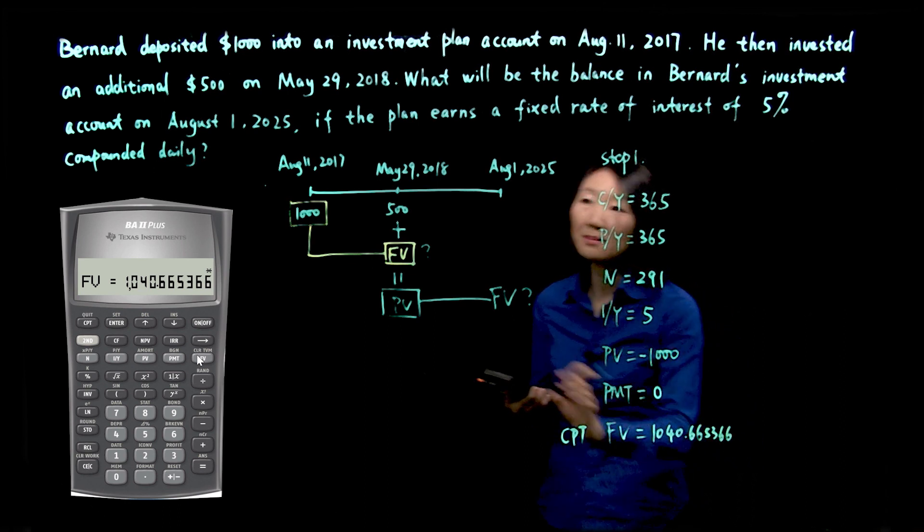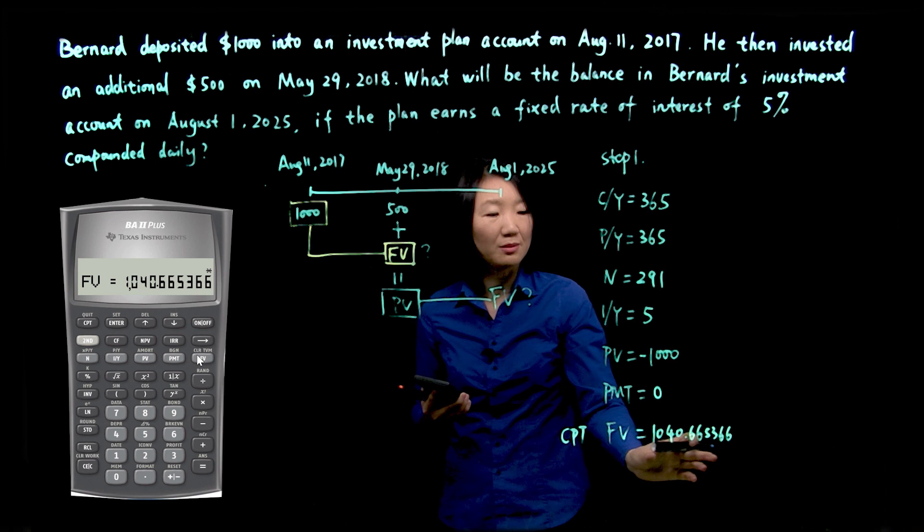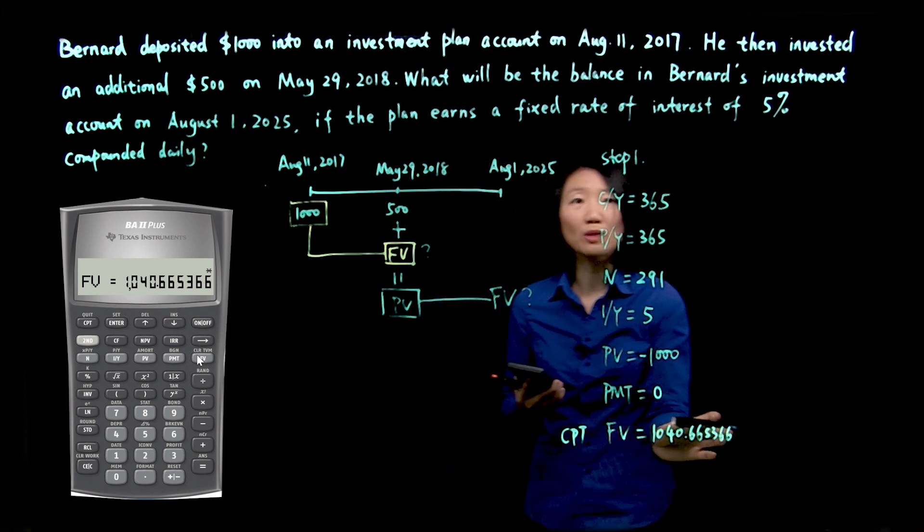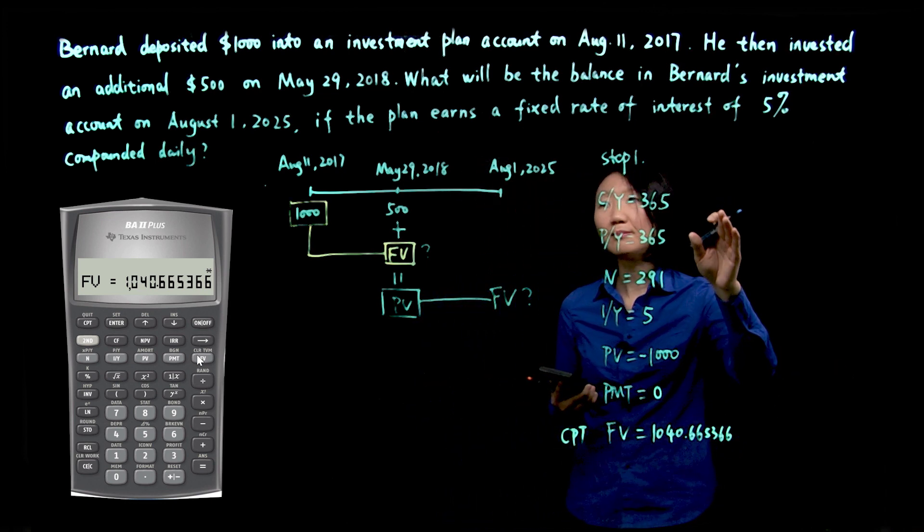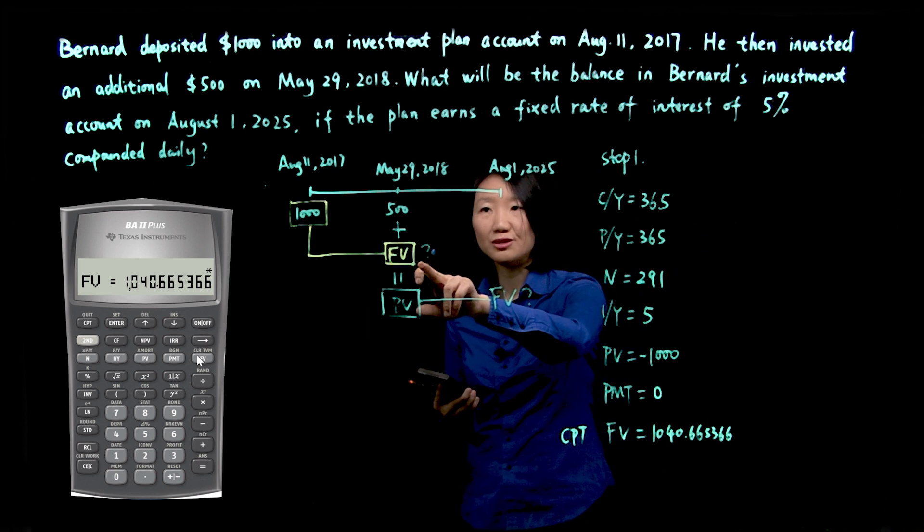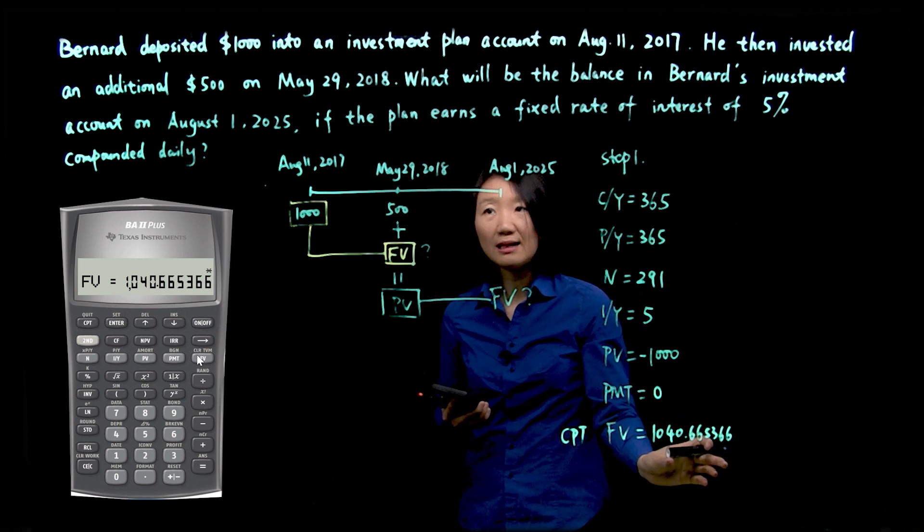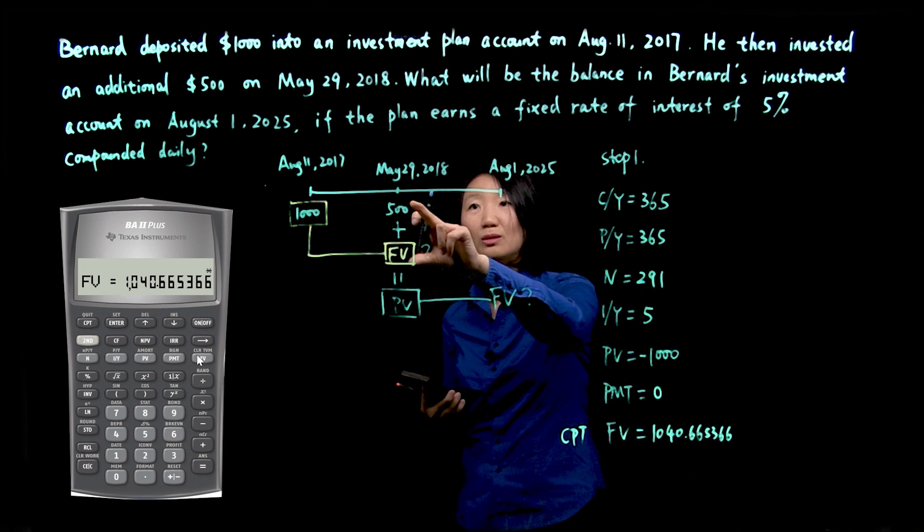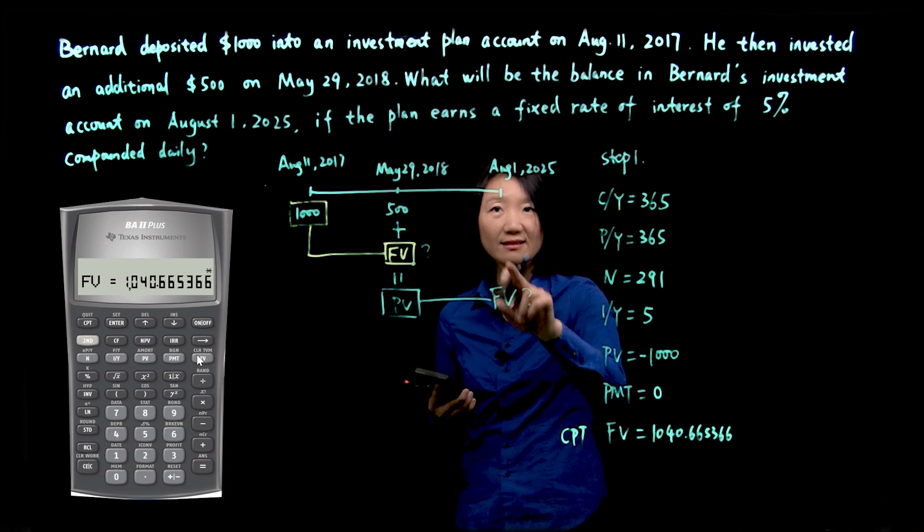Now because this is only a middle step, I will keep all the decimals. I will only round at the end. So now we found this future value. We know this number plus 500 would be my present value for the second time period.